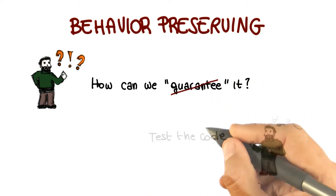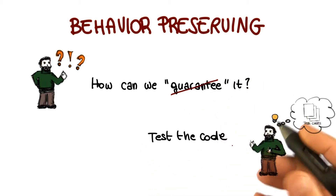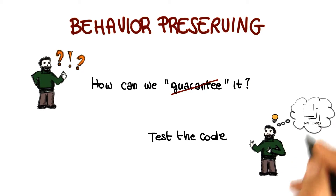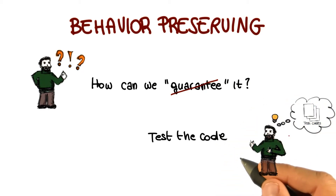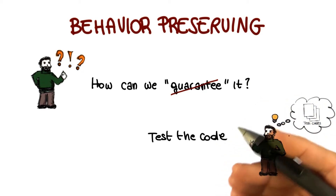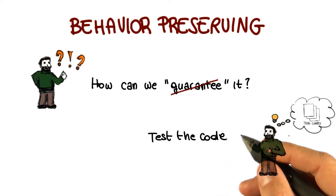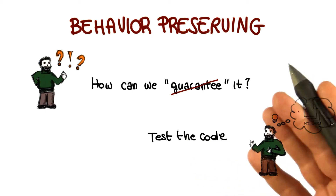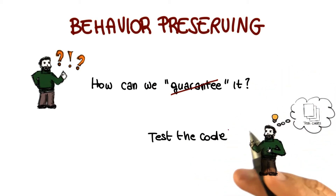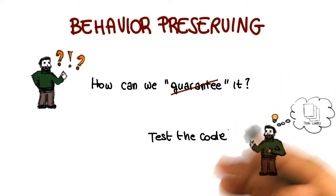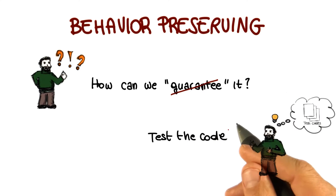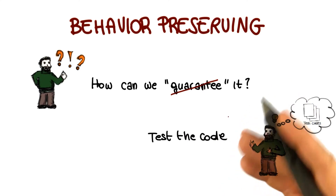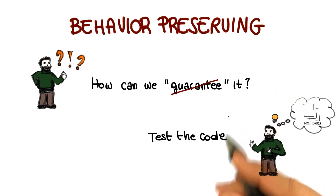Something we can do is test the code. For example, we can write tests that exercise the parts of the program affected by the refactoring. And if we're in an agile context, we might already have plenty of test cases that exercise that part of the code, so we might just have to rerun them after the refactoring. That's a very advantageous situation and a very good use of existing test cases.